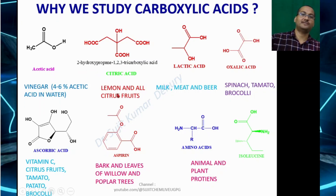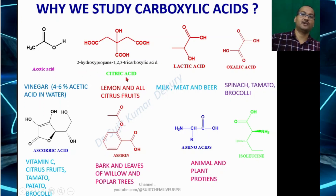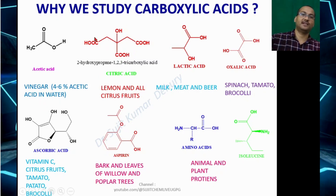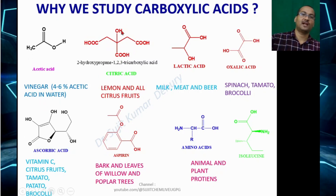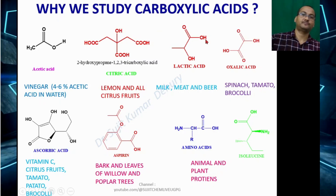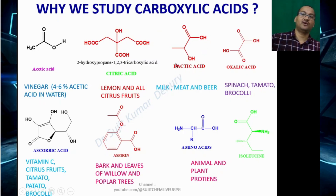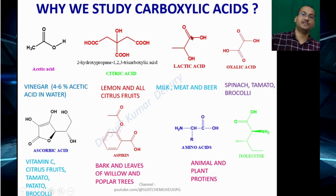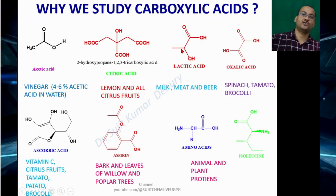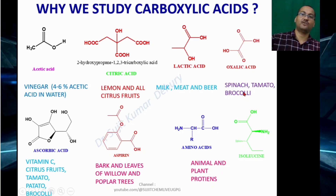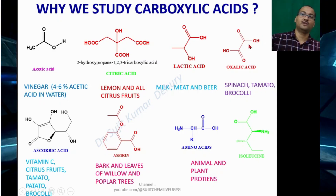Similarly, lemon and all citrus fruits contain citric acid, which has 3 carboxylic acid groups and 1 hydroxyl group. Milk and meat contain lactic acid, which has 1 carboxylic acid group, 1 hydroxyl group, and 1 methyl group. Spinach, tomato, and broccoli contain oxalic acid, which has 2 carboxylic acid groups.